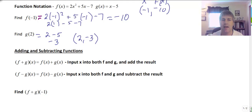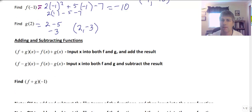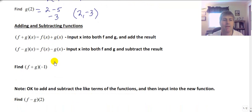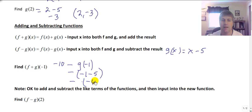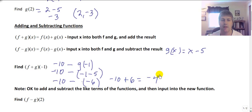We've already calculated f of negative 1 — that's negative 10. So I'm going to take negative 10, then find g of negative 1. My g function is x minus 5, so g of negative 1 is negative 1 minus 5, which is negative 6. So I take negative 10 minus negative 6, which is negative 10 plus 6, equals negative 4. So f plus g of negative 1 is negative 4.